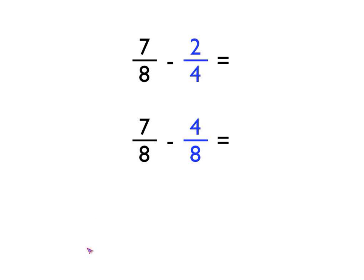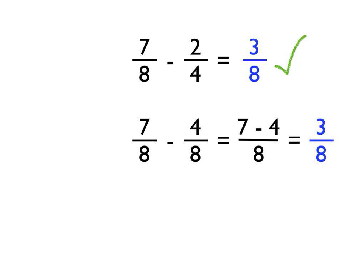Now let's look at a subtraction example: 7 eighths take away 2 quarters. I want to rewrite the fraction sum with the same denominators. I found an equivalent fraction to 2 quarters, which is 4 eighths, and rewrote the sum. Now the denominators are both eighths, so I just subtract the numerators: 7 take 4 is 3, and the denominator stays the same. That's 3 eighths. So 7 eighths subtract 2 quarters is 3 eighths.